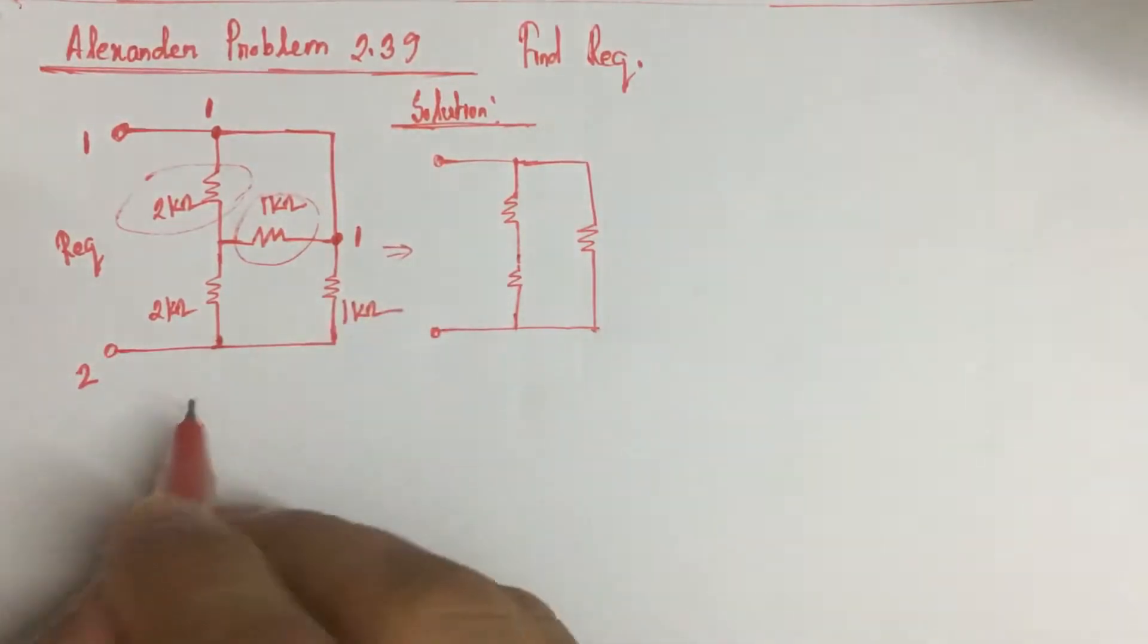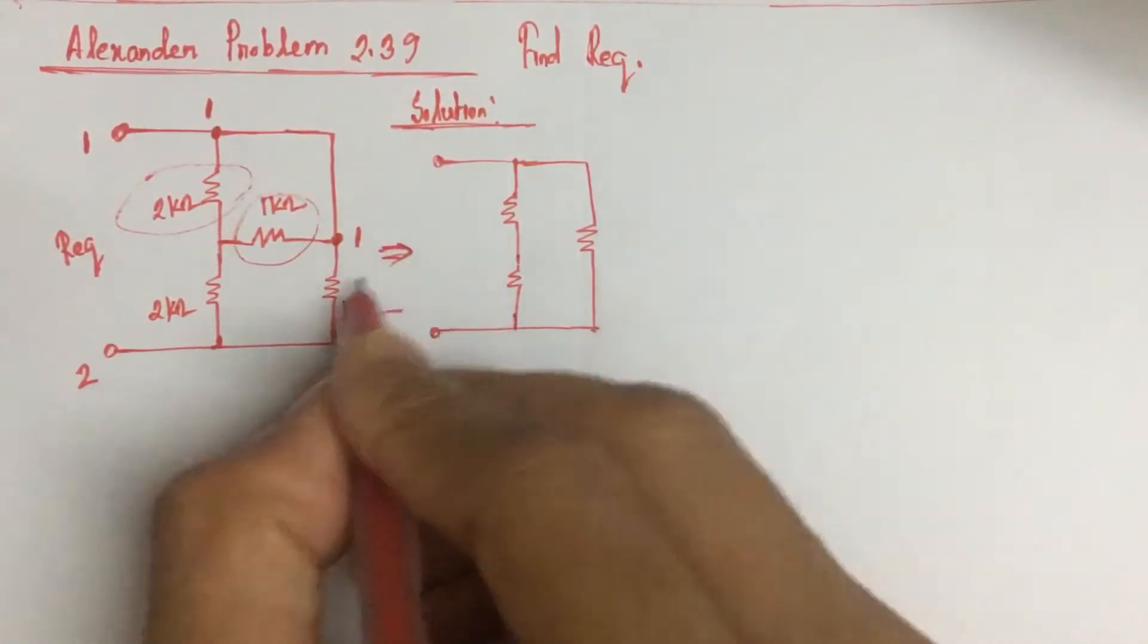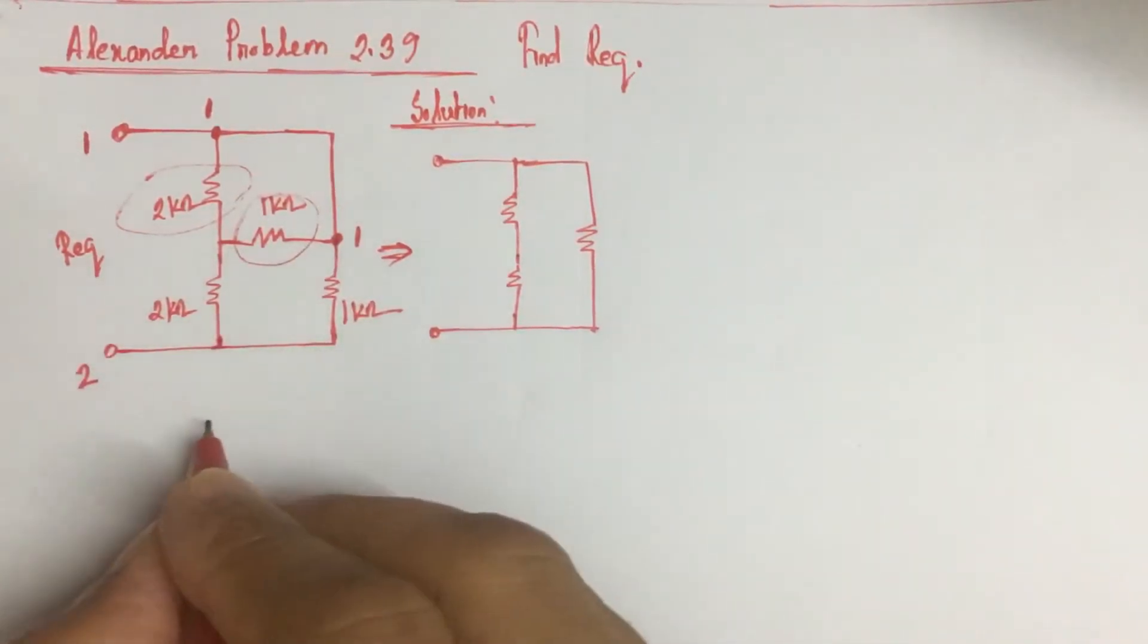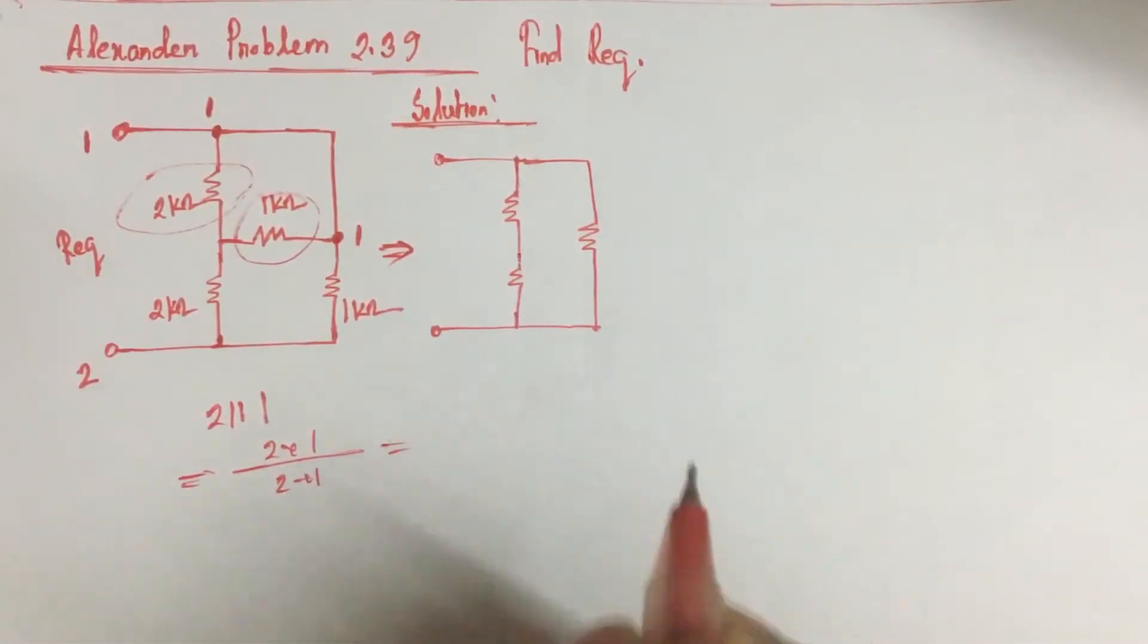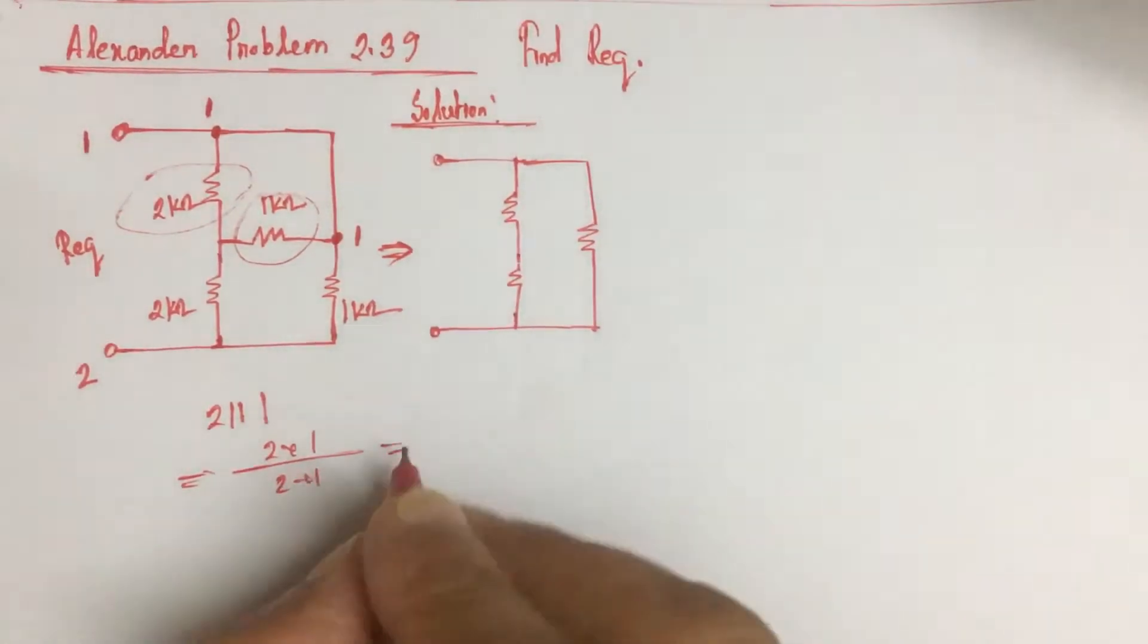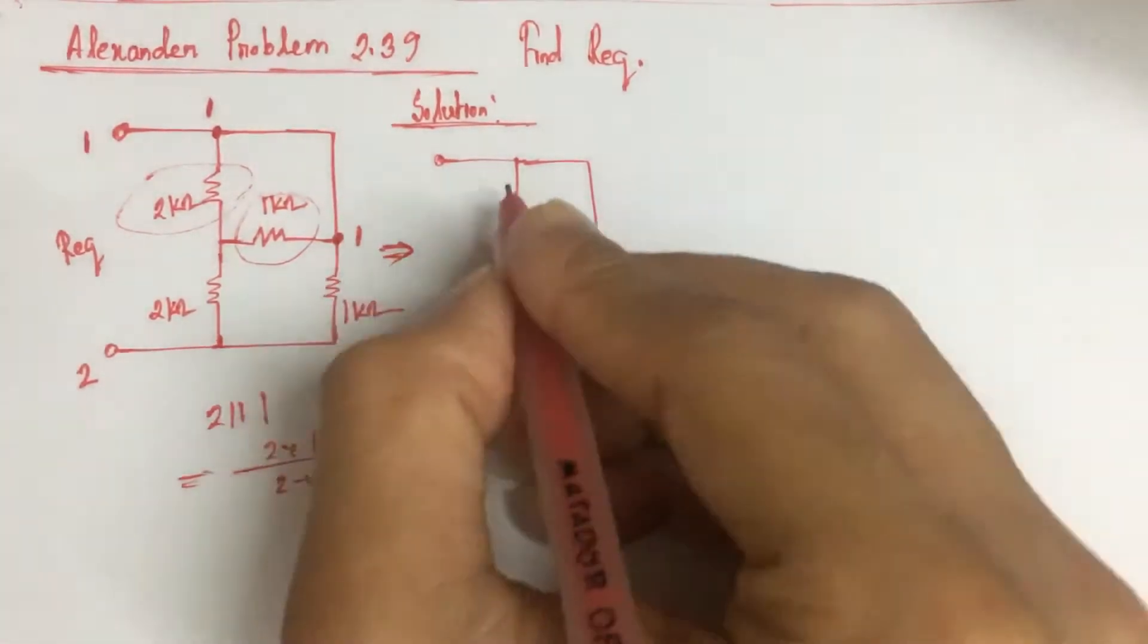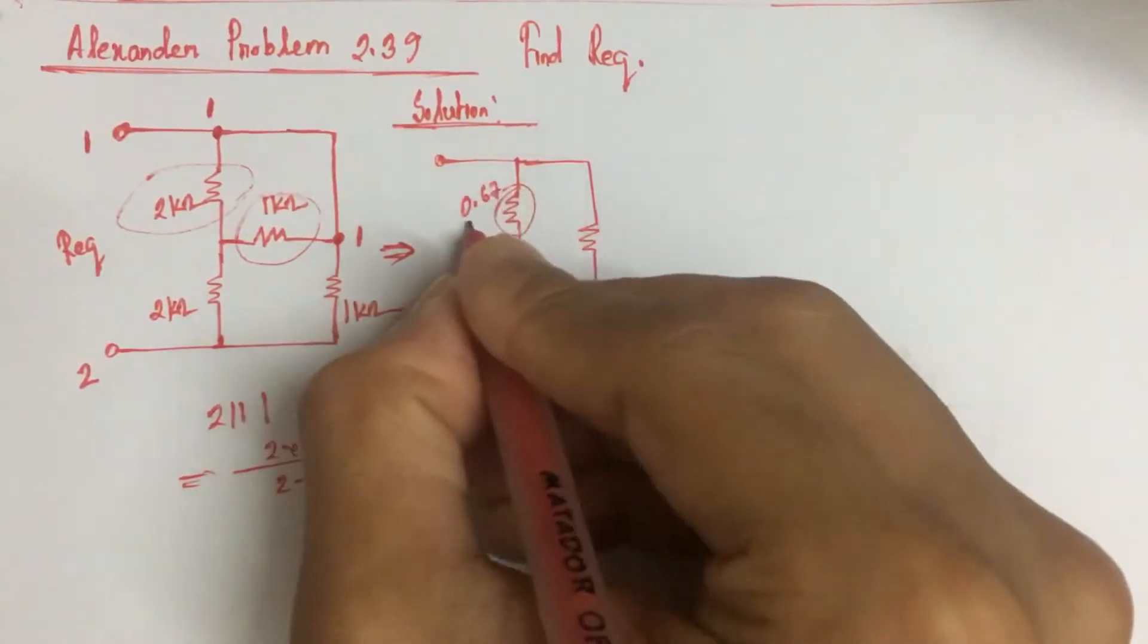Now this will be the circuit after deduction. If we combine this 2 kilo ohm and 1 kilo ohm in parallel, this will be replaced by 2 into 1, that is 2 into 1 by 2 plus 1, which equals 0.67 kilo ohm. So this resistance is 0.67 kilo ohm.